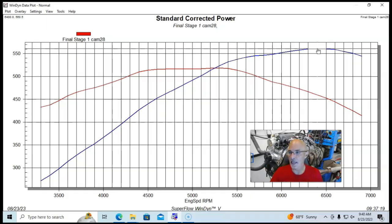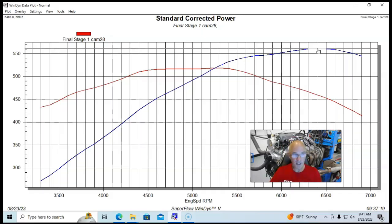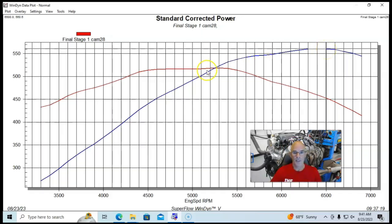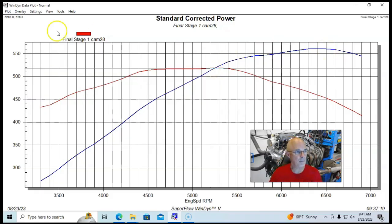Run with this camshaft on our Airflow Research headed LS3, 561 horsepower and peak torque stood at 518 foot pounds. But let's take a look - how does that compare? What would a stock cam do on this thing?